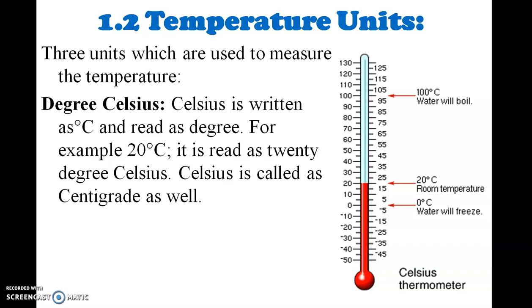For example, you get 20 degree Celsius — that is written as 20°C. It is called Celsius, not centigrade.